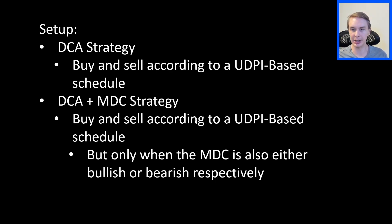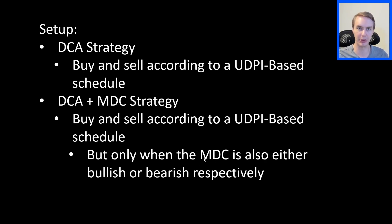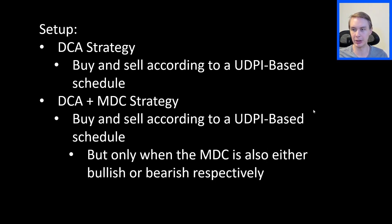The way the DCA plus MDC works: you're still buying and selling in a dollar-cost averaging approach — buying a little bit over time, spreading it out across days or weeks. But we're adding a second component: you're only buying when the MDC is bullish, or selling when the MDC turns bearish. The idea is that even if the UDPI is relatively low, if the MDC is bearish, maybe that's still not a great place to get in. You wait until the trend is more favorable, accumulate at that point, and hopefully ride things up — avoiding as much of the bear market as possible.